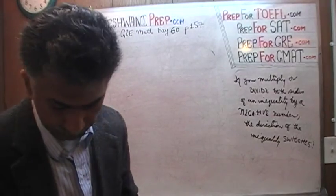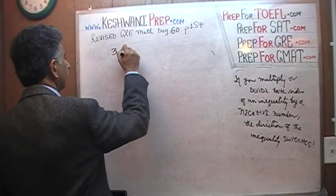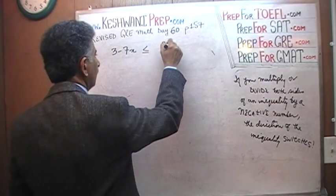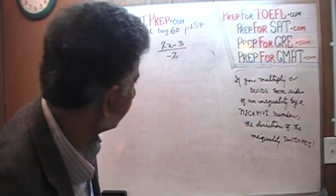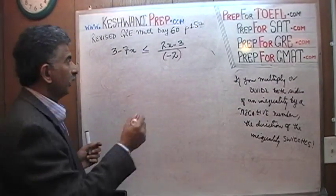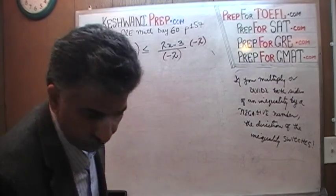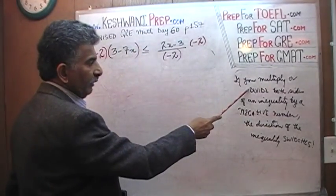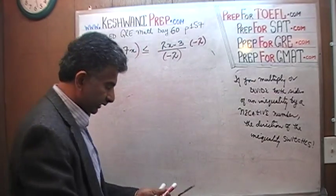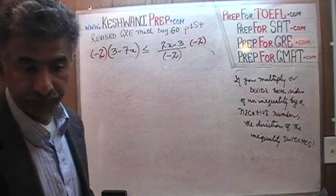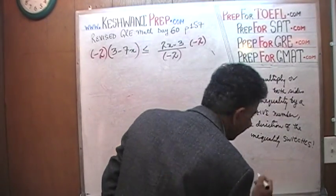Let's do today's problem, which is very similar to yesterday's. We are told that 3 minus 7x is less than or equal to 2x minus 3, all over negative 2. To get rid of the negative 2, we multiply both sides of the inequality by negative 2. Remember: if you multiply or divide both sides of an inequality by a negative number, the direction of the inequality switches immediately — right away.